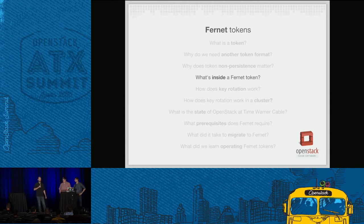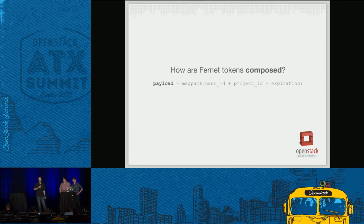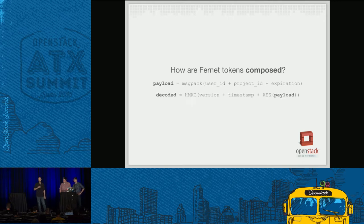So what's inside a Fernet token? Every token represents a user's identity and a scope of authorization — generally a user ID and a project ID. We tack on an expiration and message-pack the whole thing together. Message pack is a lot like JSON but it's a binary format — we call that our payload. Then we AES encrypt the payload, append another timestamp, add the Fernet version, take an HMAC of the whole thing to sign it, and that's our decoded token. We just base64 encode it and we're done.